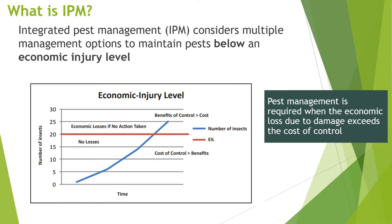We refer to this concept of the economic injury level, shown in the graph here. Looking at the number of insects, we have a red bar indicating the threshold above which, if you don't take any action, the cost of the damage will exceed the cost of the control. But below that, it isn't worth implementing a control because the cost of control is more than the benefit you get from not applying it — you're not getting enough losses to make it worth it.